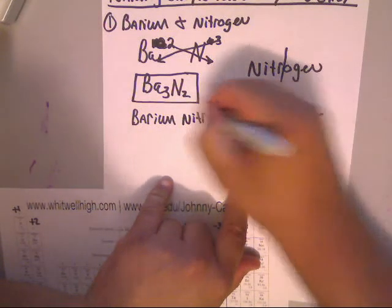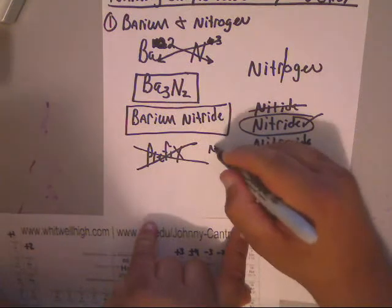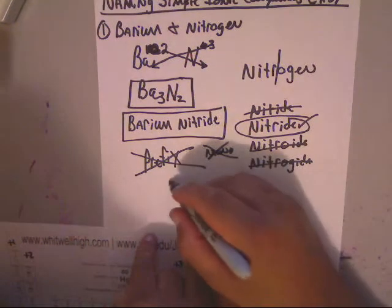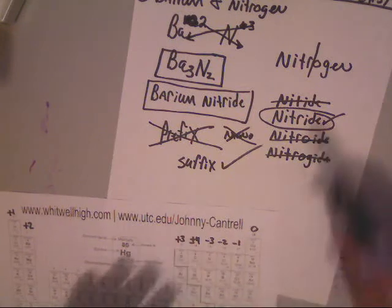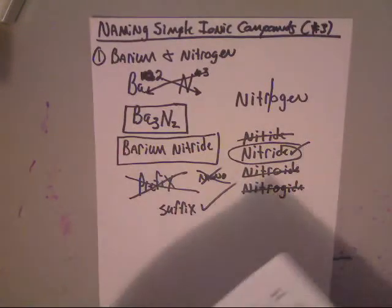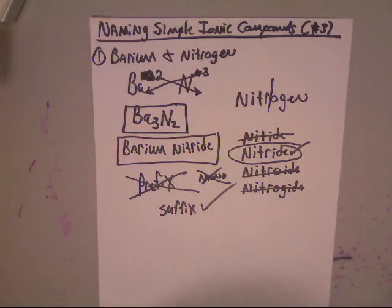And that's it. Remember, prefixes are not used — no mono or any of that stuff. The -IDE suffix is needed. This concludes naming simple ionic compounds. Our next series of videos will cover metallic compounds. Hope this helps. Good night.